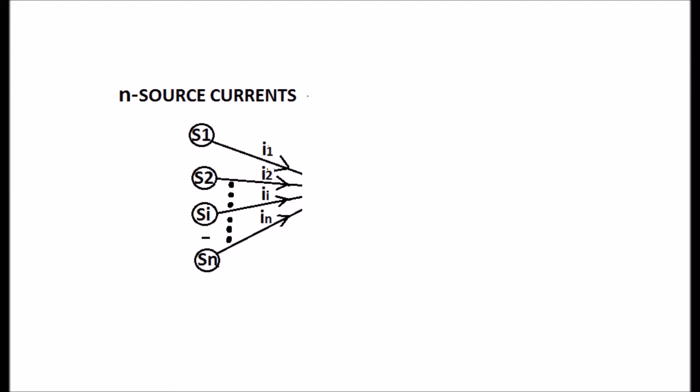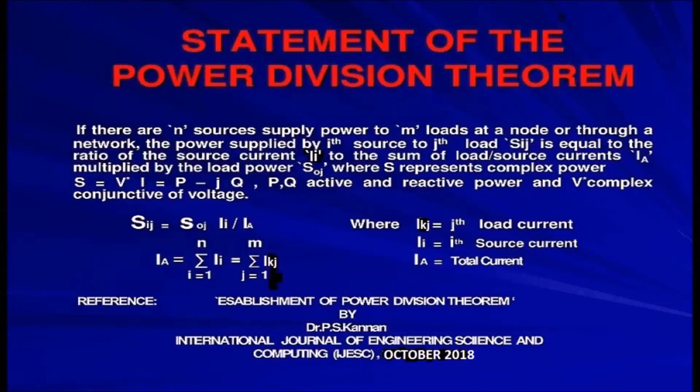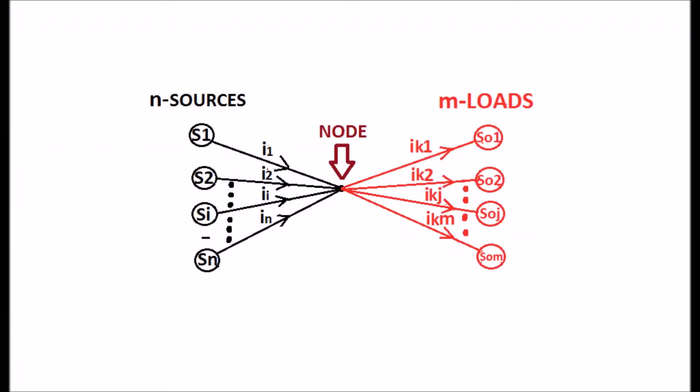The same N source currents are feeding power to the M loads through a network instead of a node. As per the theorem, whether through a node or through a network...